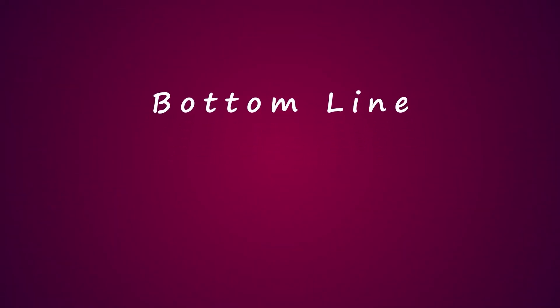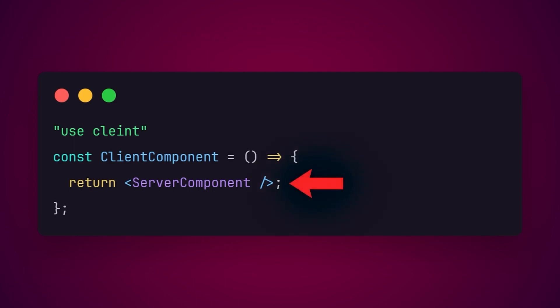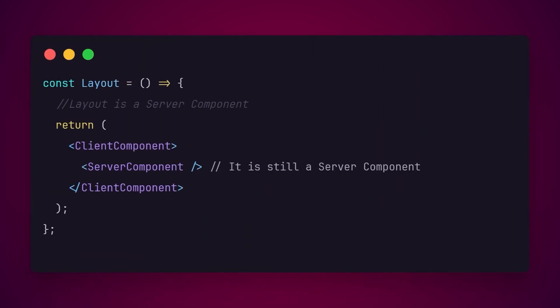So this is the bottom line: if you use a server component directly inside the JSX of a client component, it will be turned into a client component. But if you wrap a server component inside a client component as its children, it will not turn it into a client component. I hope you now understand the difference, and this mistake is demystified.